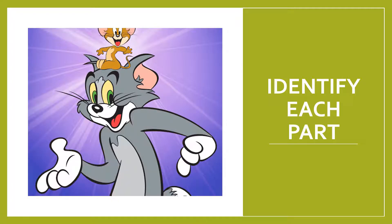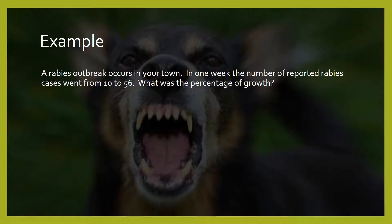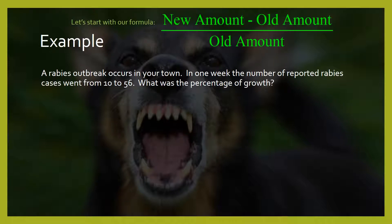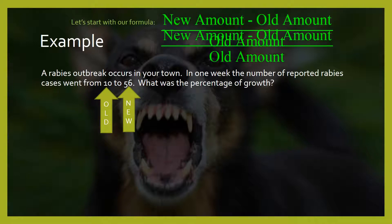So the trick is you have to identify what each part is. Let's do an example. There's a rabies outbreak. You had 10 cases before; now you have 56 cases. We're asked to find the percentage of growth. Here's how: it's the new amount minus the old amount, divided by the old amount. So 56 is the new amount and 10 is the old amount.